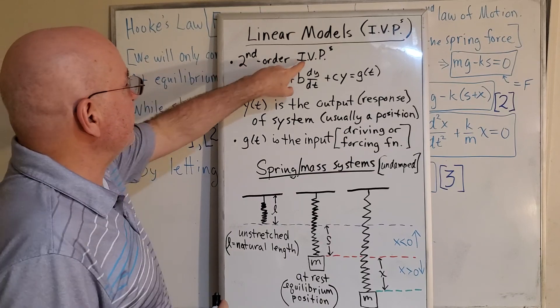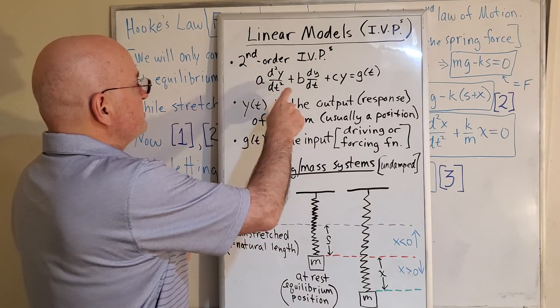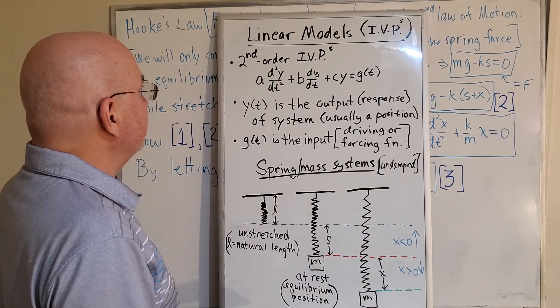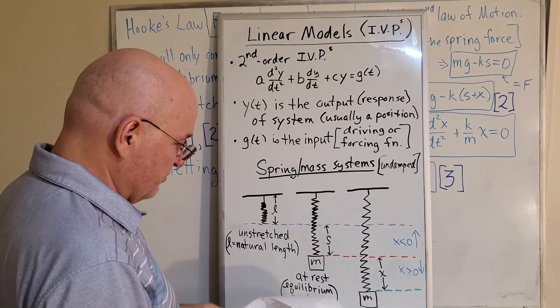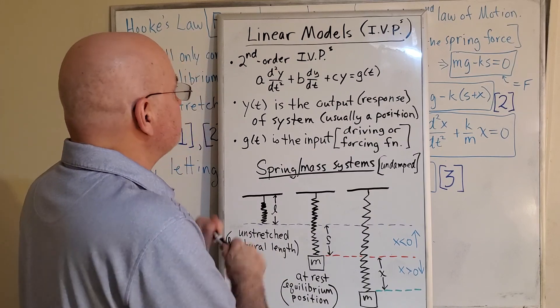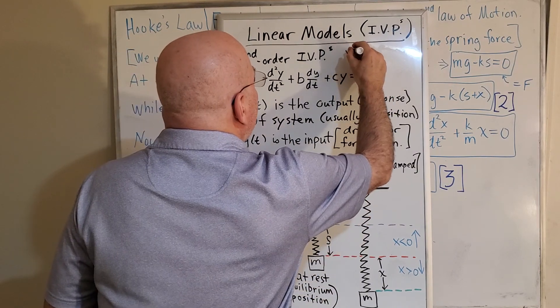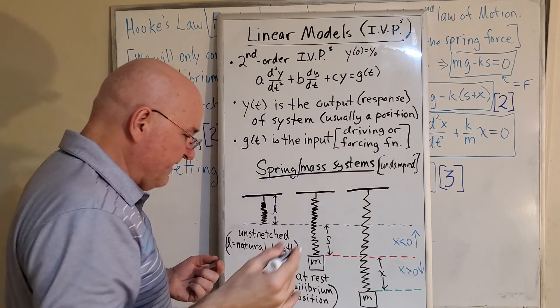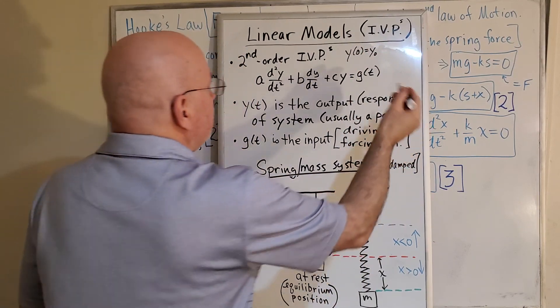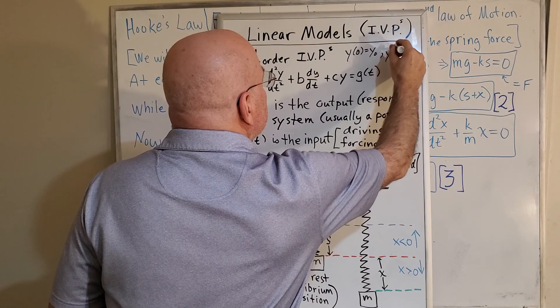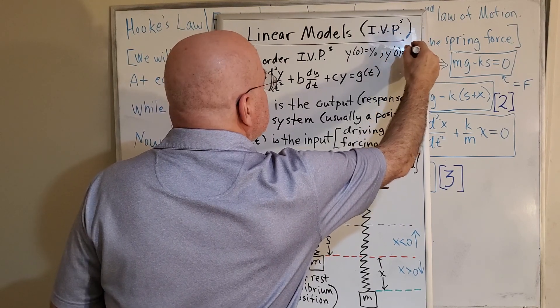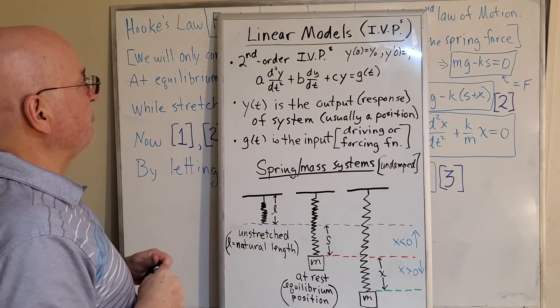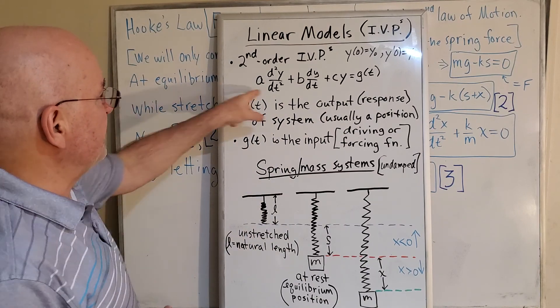We know that second-order initial value problems start out with this equation, and of course I left off the initial values, but it would just be y at time 0 equals y₀, and then y prime at time 0 is equal to y₁. That would be the initial value problem we're looking at in the general case.